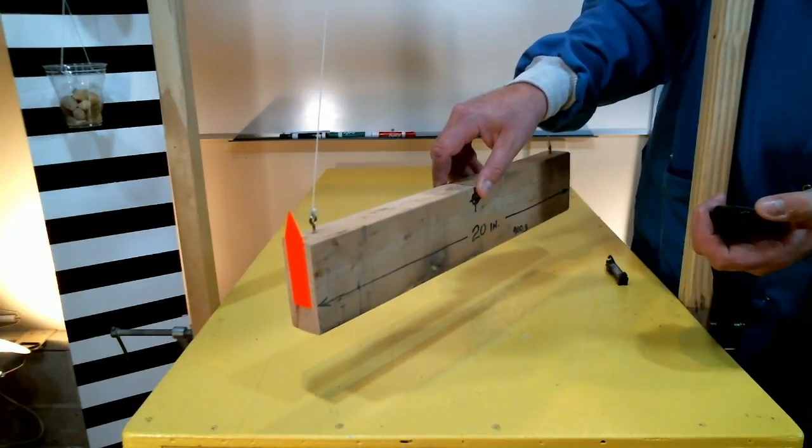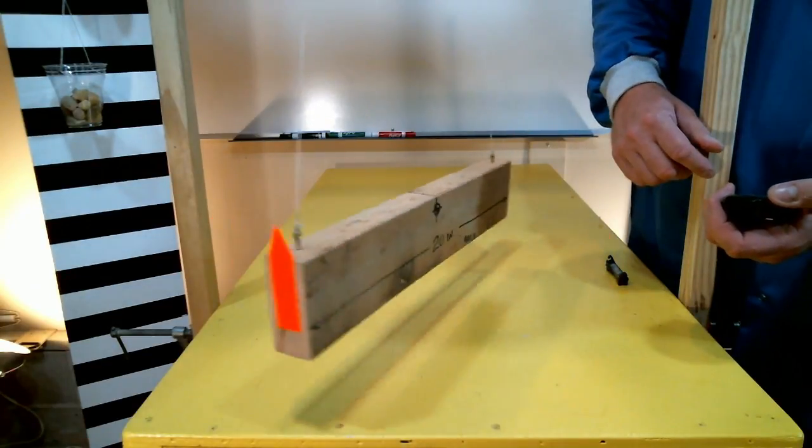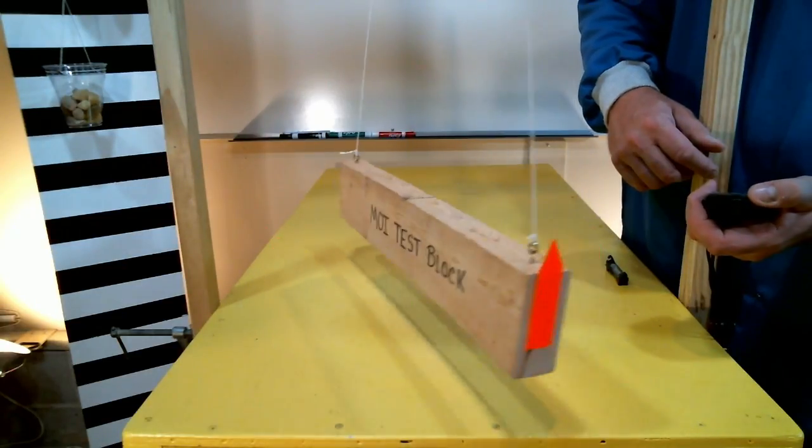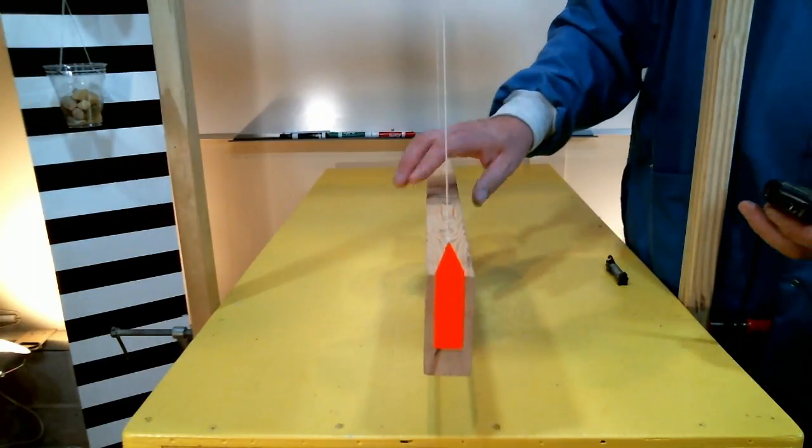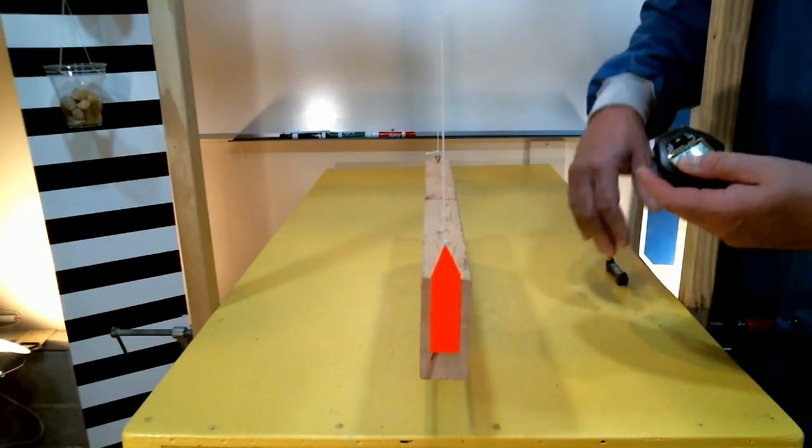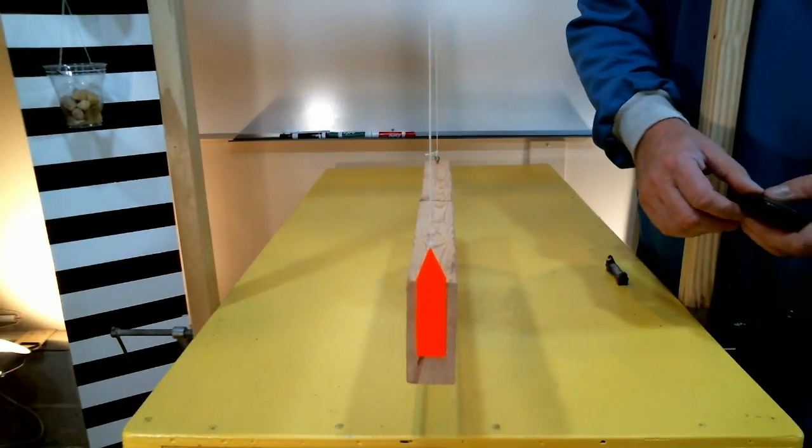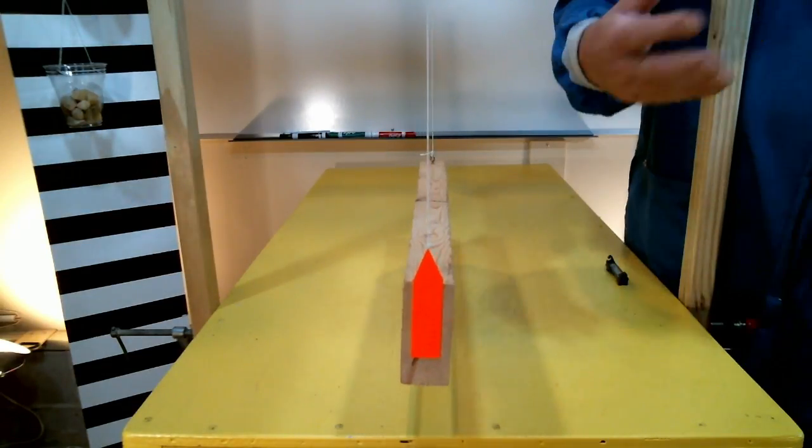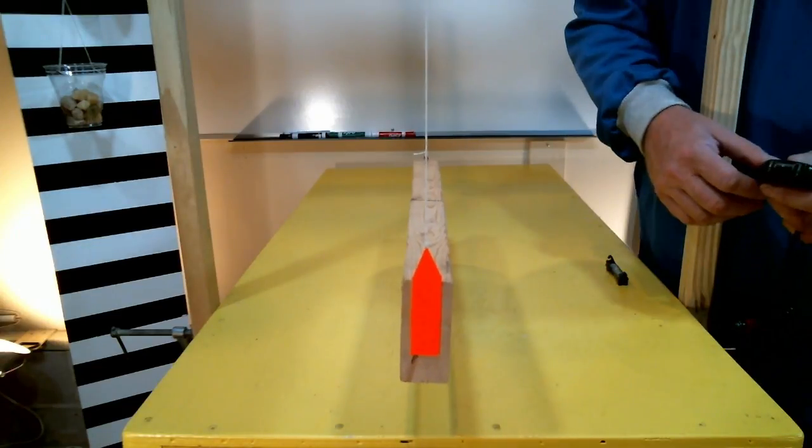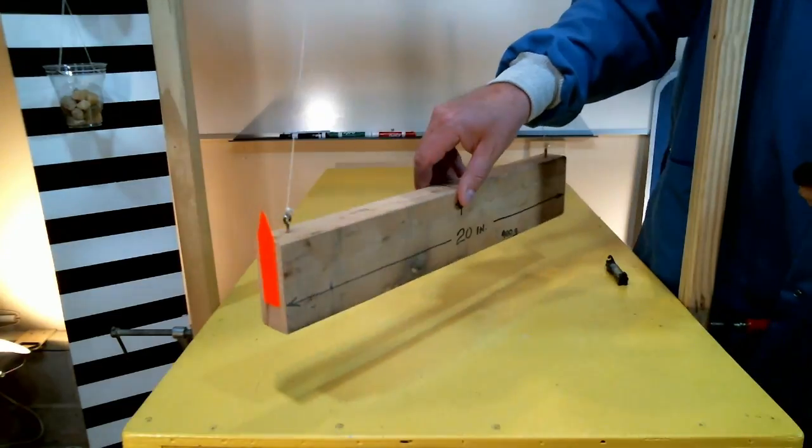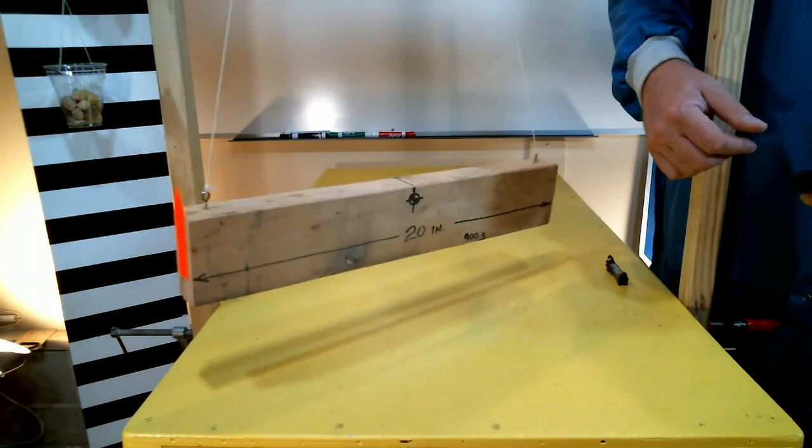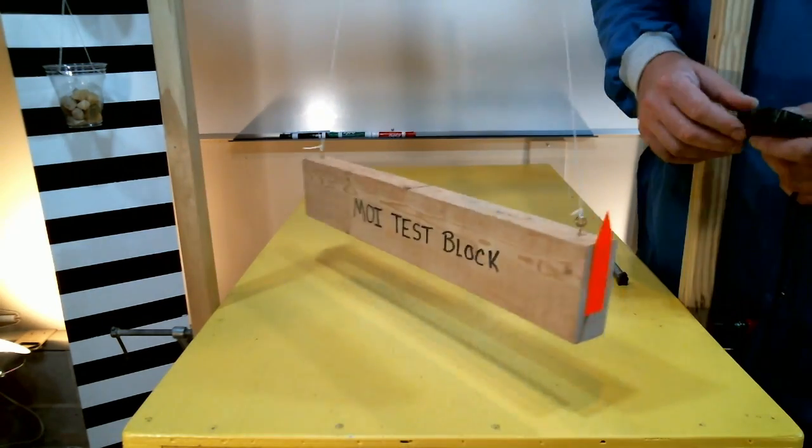Three, two, one, release. One, two, three. So there I got 3.5 seconds. Now it's a little bit higher than the previous test however I've got to make multiple tests to take an average because starting and stopping the stopwatch is not very precise. So again no matter how I deflect the test article the period will be the same for this particular setup.